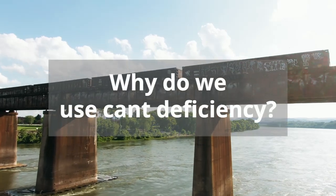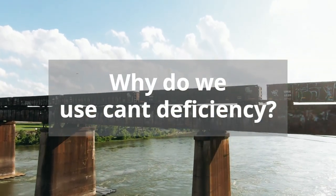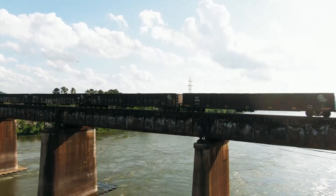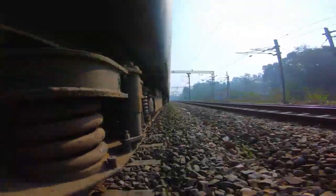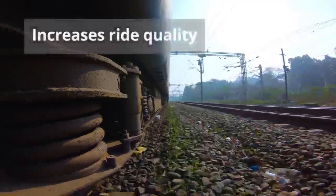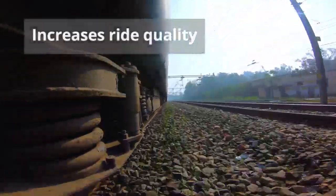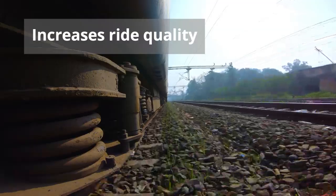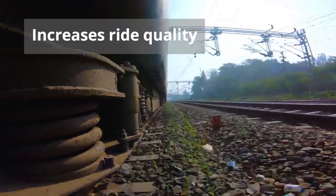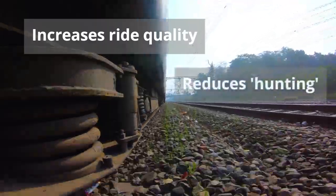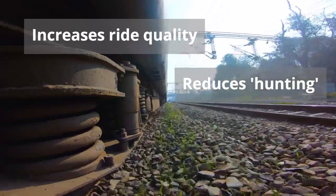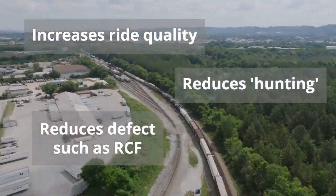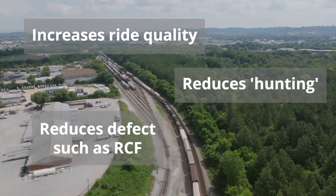So, why do we utilize cant deficiency? Cant deficiency is used, because applying less than the equilibrium cant to a curve, means the forces on the train will be slightly towards the high rail. This helps ride quality, as the wheel is forced constantly against the rail. At equilibrium cant, as the forces are balanced, the train wheels can hunt between the rails. This is where they zig-zag between the two rails, never running smoothly against one or the other. Having a deficiency of cant, also reduces wear and defects on the rails.